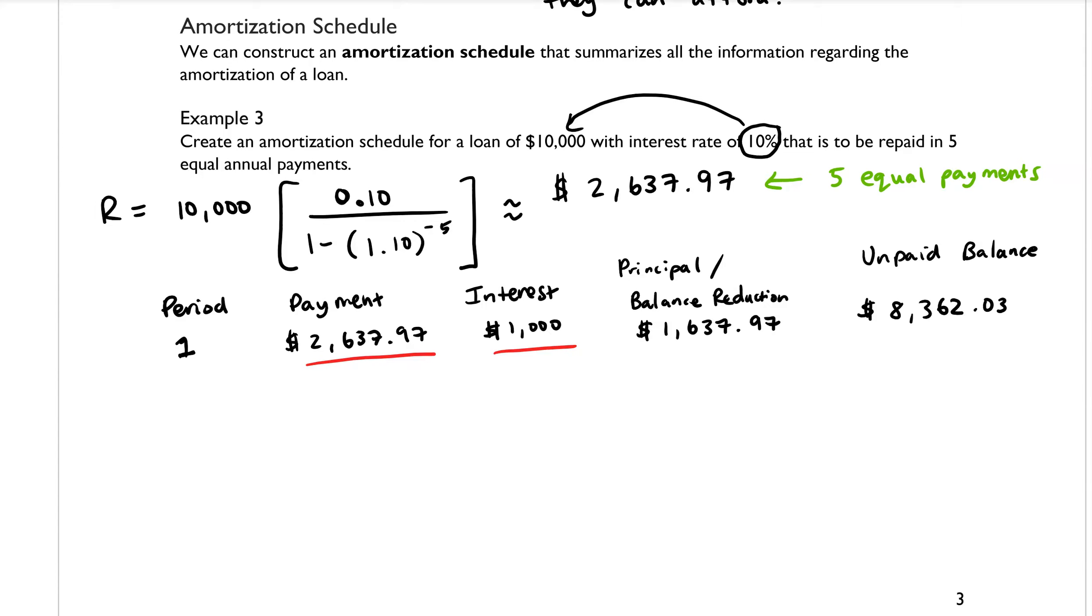So let's go ahead and calculate these values as well for the second period of our loan. Again, we know that all of the payments are going to be the same amount, so $2,637.97. Now, how much of that in the second period is going towards interest? Well,